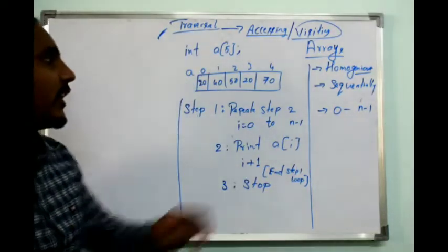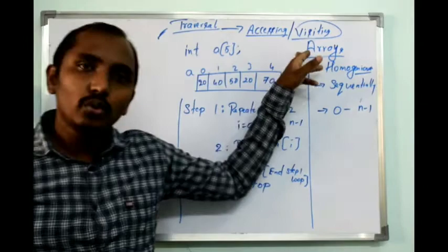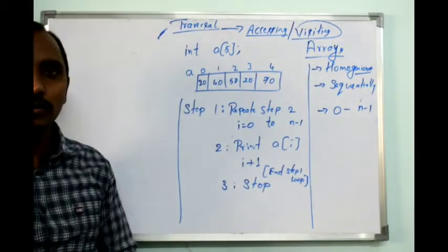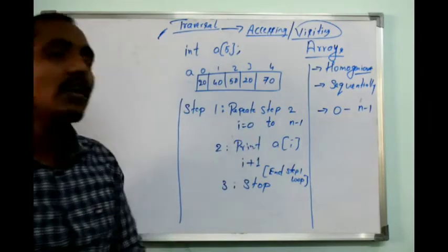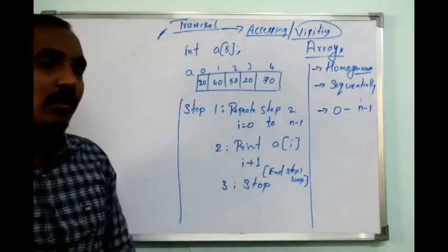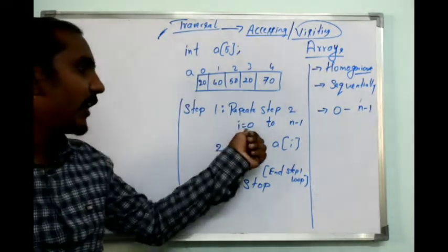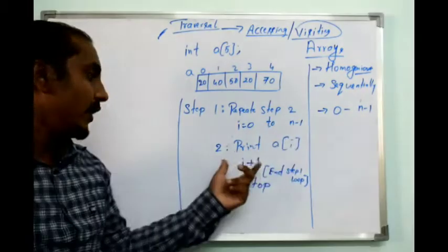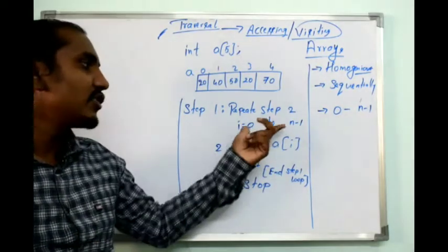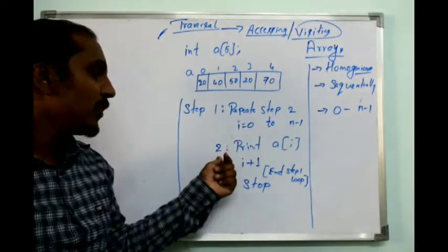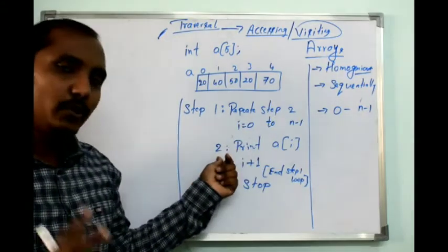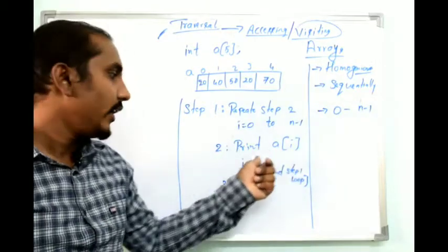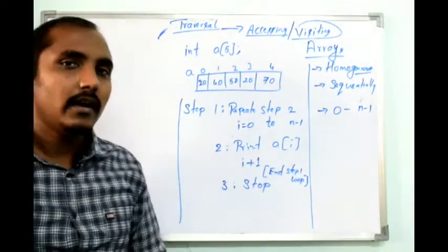We took the example of an array and wrote the algorithm for traversal. Step 1 represents a for loop starting from i equals 0 and ending at n minus 1. Until this condition is true, we execute step 2 — printing the value of a[i] and incrementing i.